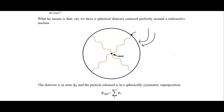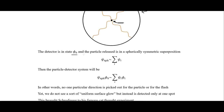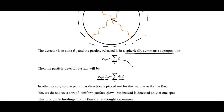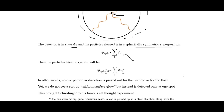The detector is in state phi sub naught, and the released particle is a spherically symmetric superposition. The particle-detector system will be a superposition of all states. The superposition of the detector would make you think you'd see a uniform glow over the whole thing — similar to what we discussed in the previous video, where the pointer would be pointing in all directions at the same time.